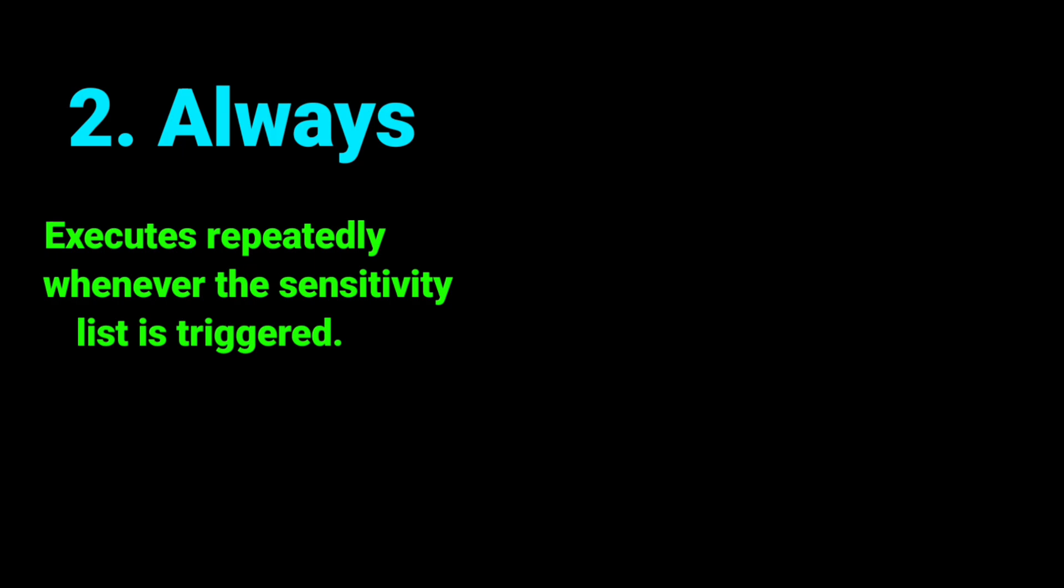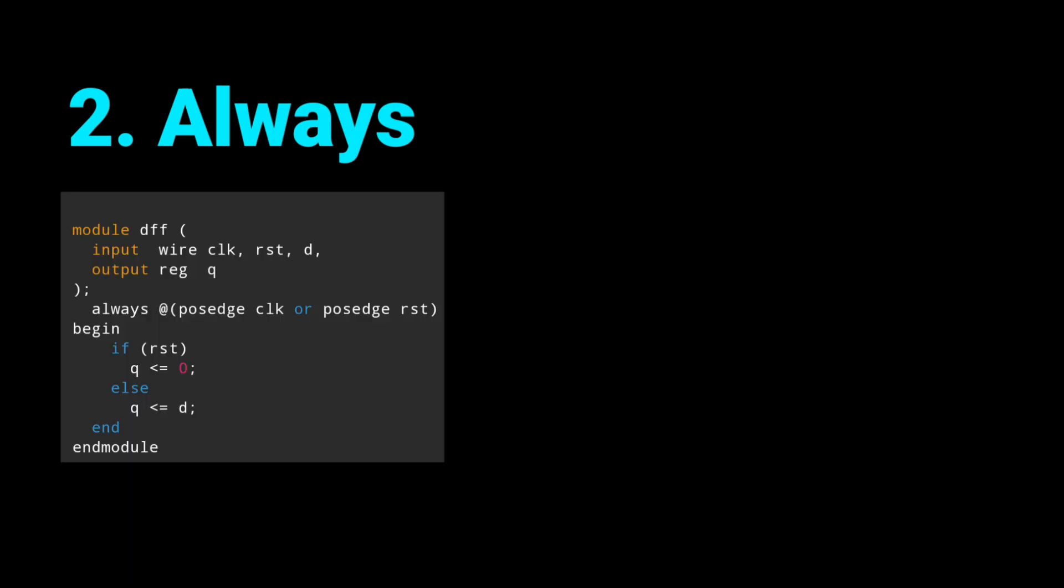Second is Always block. It executes repeatedly whenever the sensitivity list triggers. It is used for modeling combinational logic, sequential logic, and test bench activity. Here's the example of sequential logic and combinational logic.